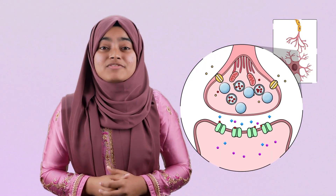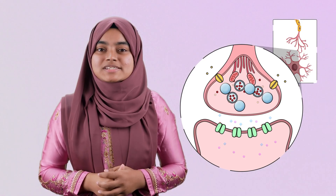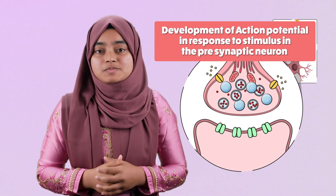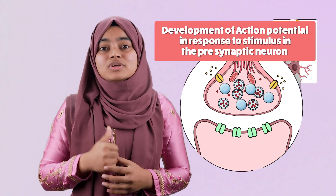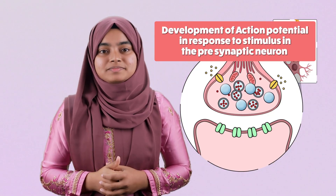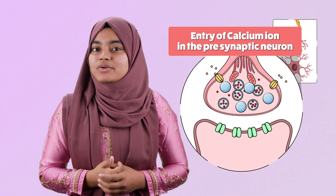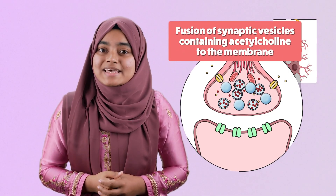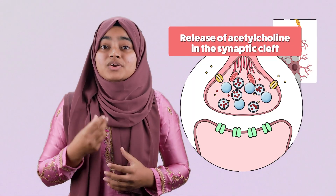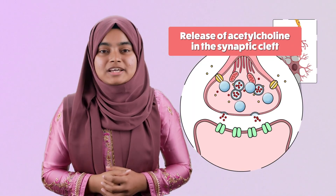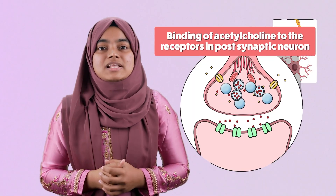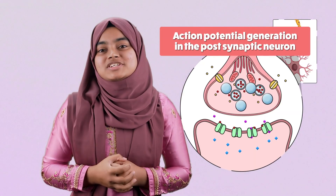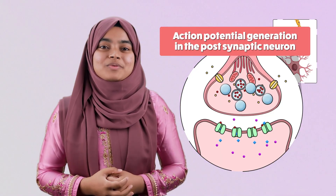Let's quickly recap all the key points. First, development of action potential in the pre-synaptic neuron in response to a stimulus. Then, entry of calcium ions into the pre-synaptic neuron, fusion of synaptic vesicles containing acetylcholine to the membrane, and release of acetylcholine into the synaptic cleft. Finally, binding of acetylcholine to receptors in the post-synaptic neuron and generation of action potential in the post-synaptic neuron.